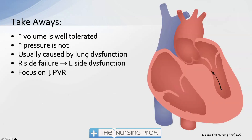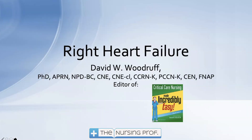Key takeaways: an increase in volume is well tolerated by the right heart, but an increase in pressure is not. Right-sided failure is usually caused by lung dysfunction. If the right side fails, the left side will at least have some dysfunction, if not fail itself. Focus on decreasing pulmonary vascular resistance. Thank you for joining me for Right Heart Failure. My name is David Woodruff — until next time, bye now.